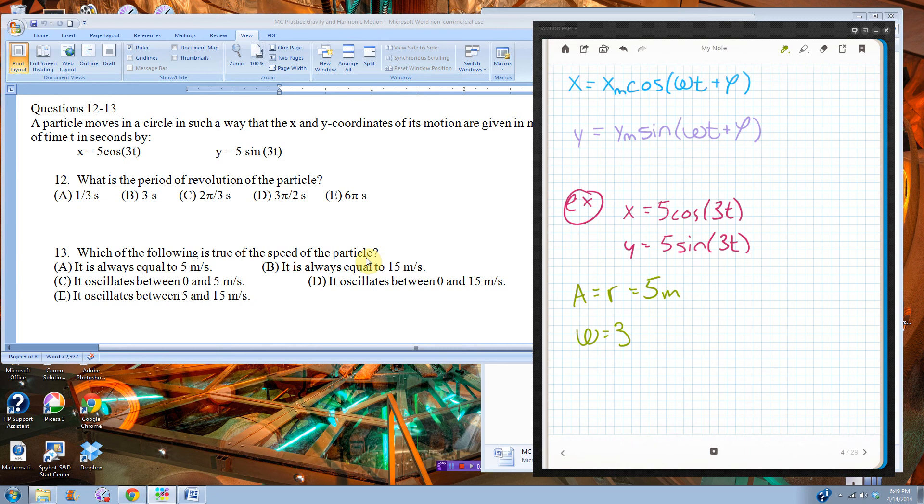So, then they want, what is the period of the revolution of the particle? Well, the period of revolution of the particle is, omega is 2 pi over period. If I solve this for period, I end up with period equals 2 pi over omega, 2 pi over 3. That's C.